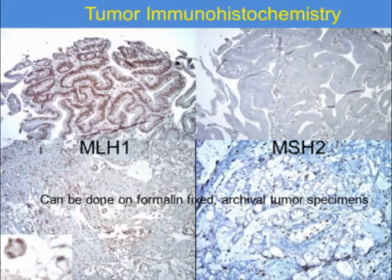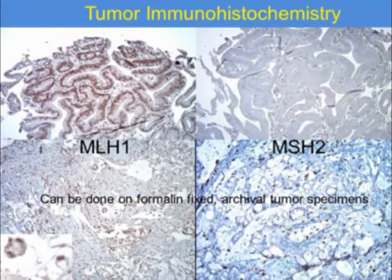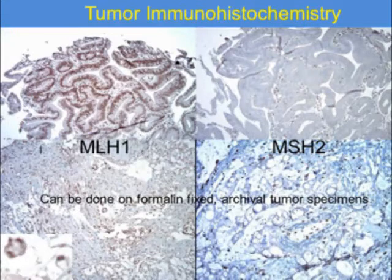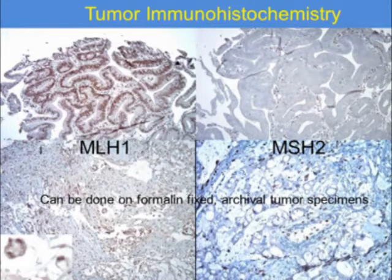Tumor immunohistochemistry is another way to identify mismatch repair deficiency. This is an example of MLH1 where you can see brown staining in the nuclei within the tubulovillous adenoma and the tumor. In this other individual, the tumor lacked expression of MSH2 — both in the adenoma and the tumor — meaning this individual had abnormal expression of the mismatch repair protein MSH2.